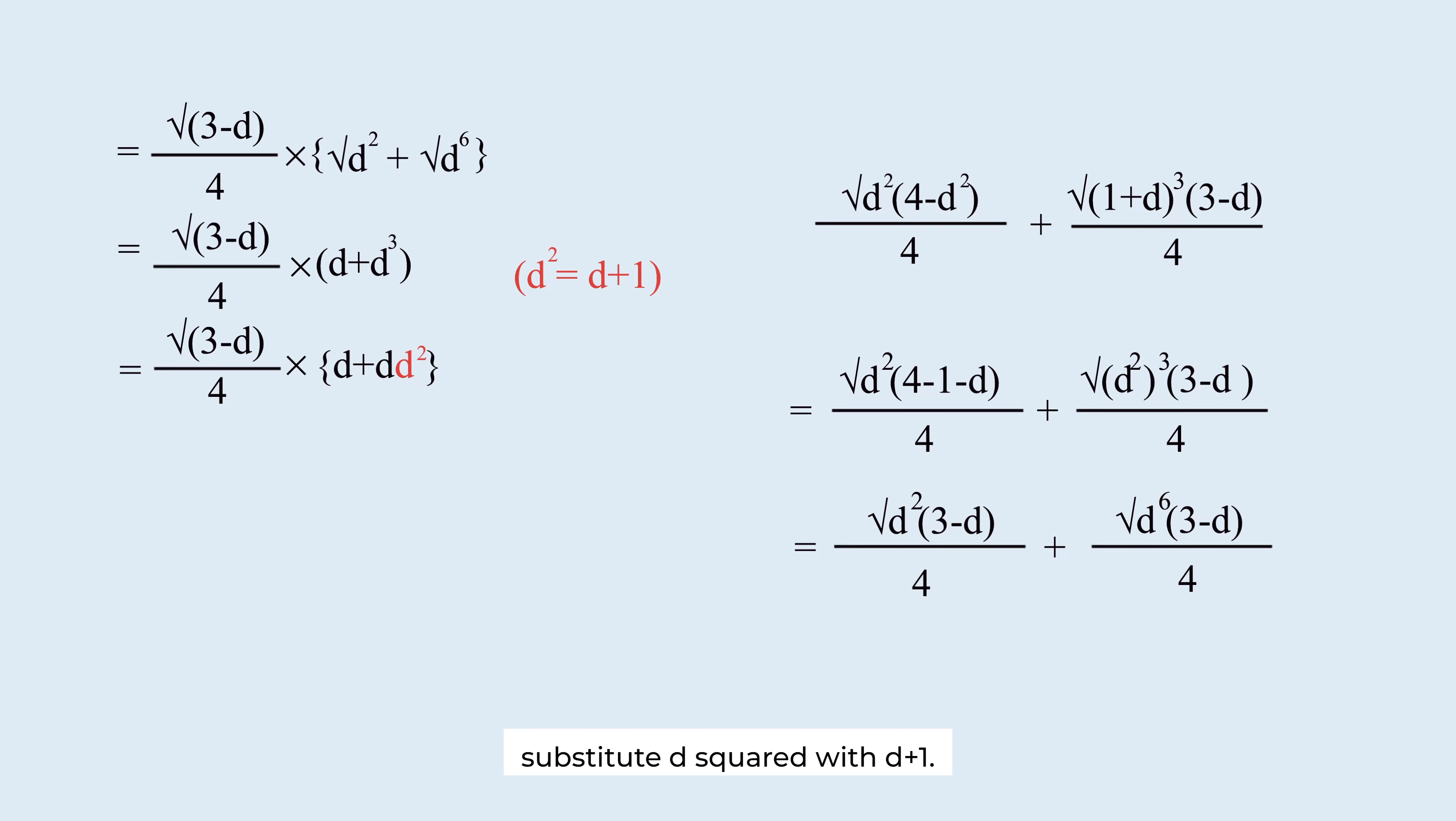Substitute D squared with D plus 1 and simplify. Bring 1 plus 3D under the square root. Expand the square of a binomial.